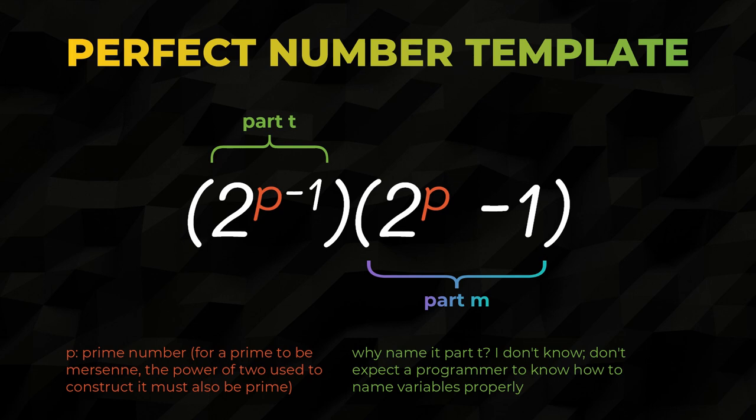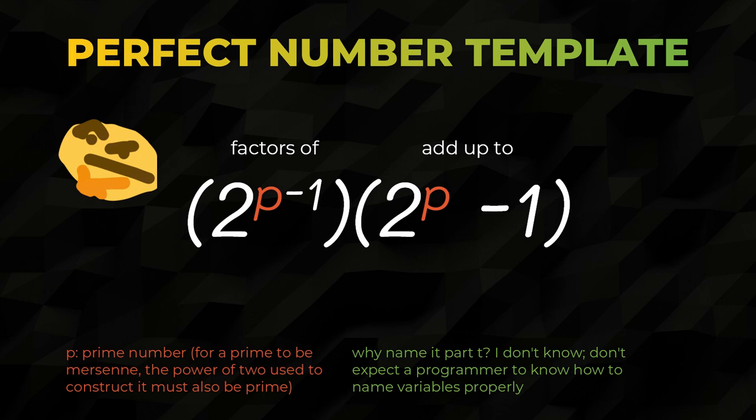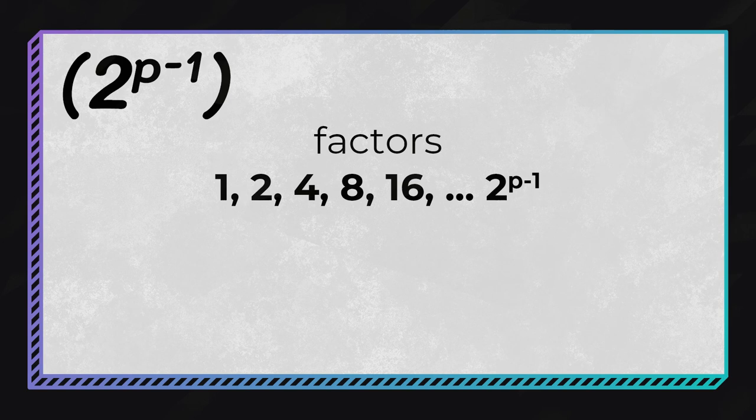Now, do you notice anything interesting about the relationship between parts m and t? Something integral to a possible proof? If you have a better mathematical intuition than I, and trust me, there are a lot of you, you might have noticed that the sum of part t's factors is equal to part m, the Mersenne prime. The reason for this is actually quite intuitive. Because part t is a power of 2, all of its factors will also, by definition, be other powers of 2, because 2 is part t's only prime factor.